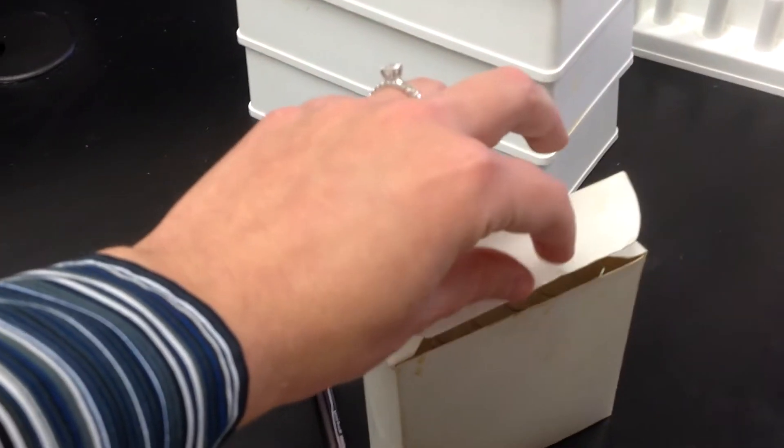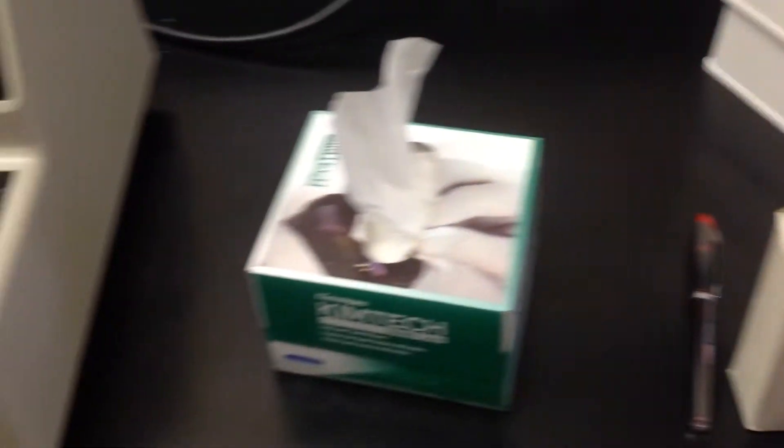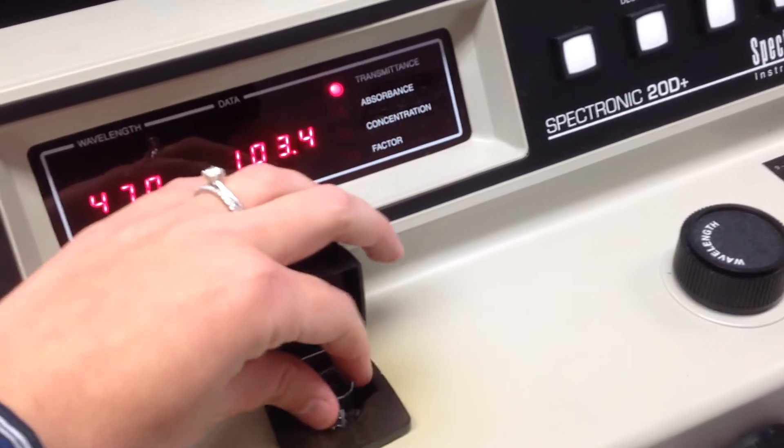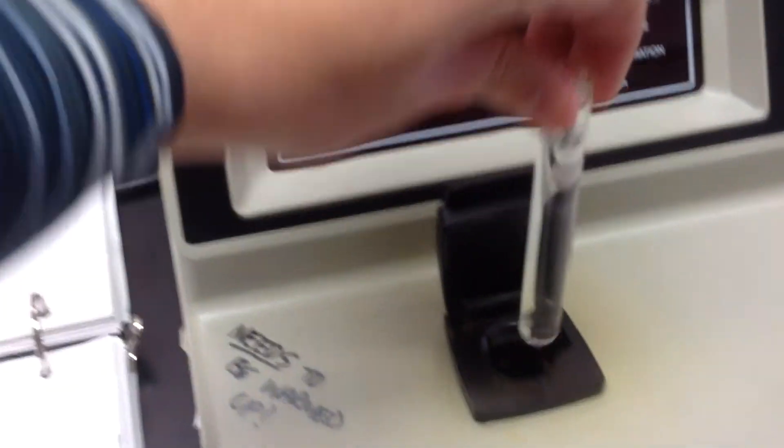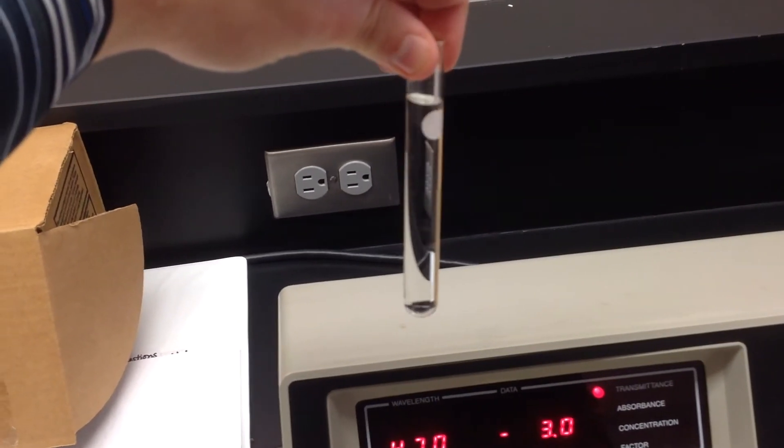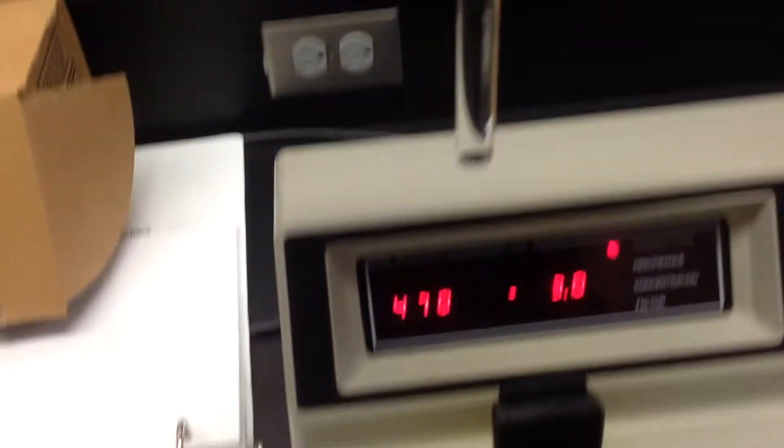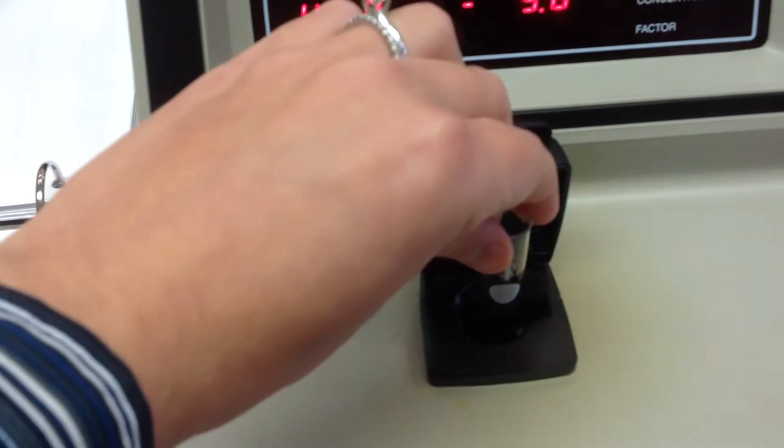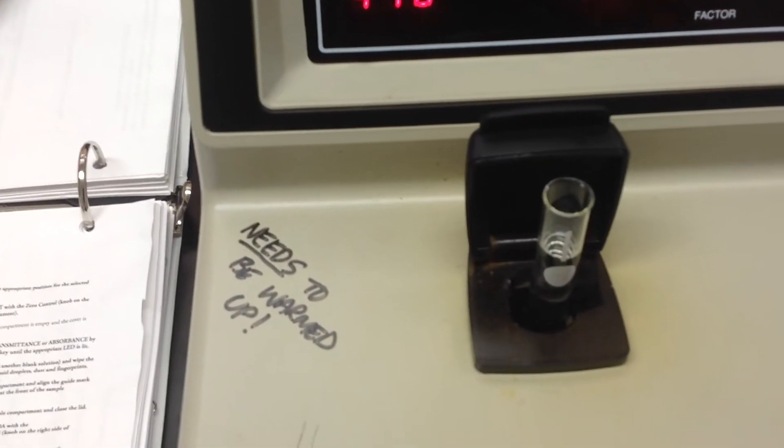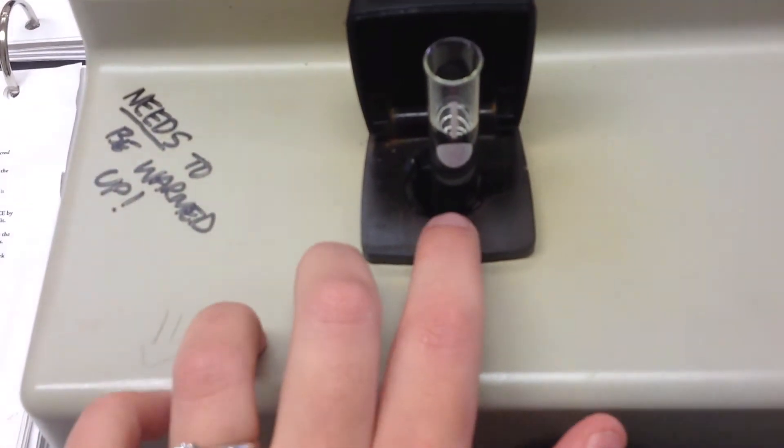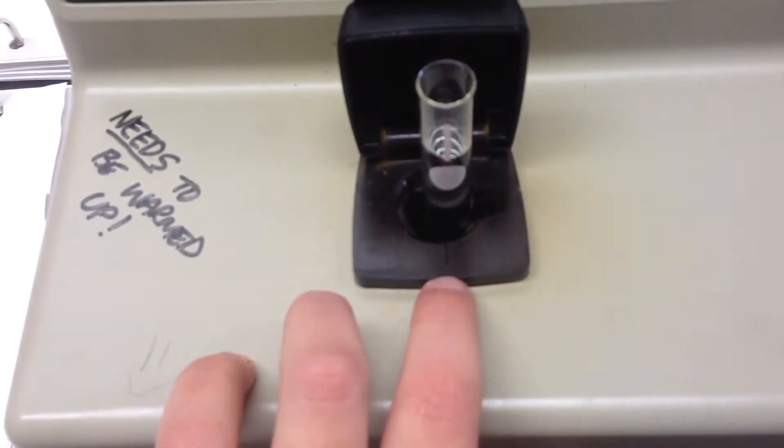So you're going to get a cuvette and you're going to fill it with DI water. Don't use tap water, use DI water. And you're going to fill it to the bottom of the line. Let me see the top of the water, that's where you're going to fill it. And then you're going to put it in the little reader pocket and you want to put it in there so that the line on your cuvette, the white line on your cuvette, lines up with the line that you can't really see, but there's a line right here on the plastic. You want to line them up perfectly.